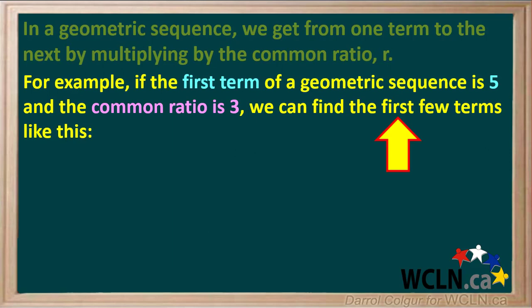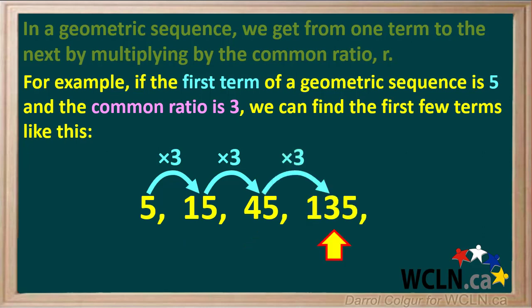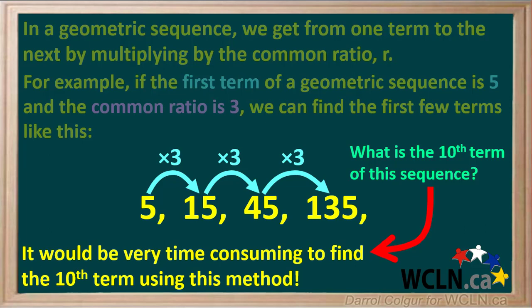For example, if the first term of a geometric sequence is 5 and the common ratio is 3, we can find the first few terms like this. We write down 5 for the first term, then multiply by 3 to get the second term, 15, then by 3 again to get the third term, 45, and once more to get the fourth term, 135. We could keep going, but what we're asked for is the tenth term, and it would be very time-consuming to find it using this method.